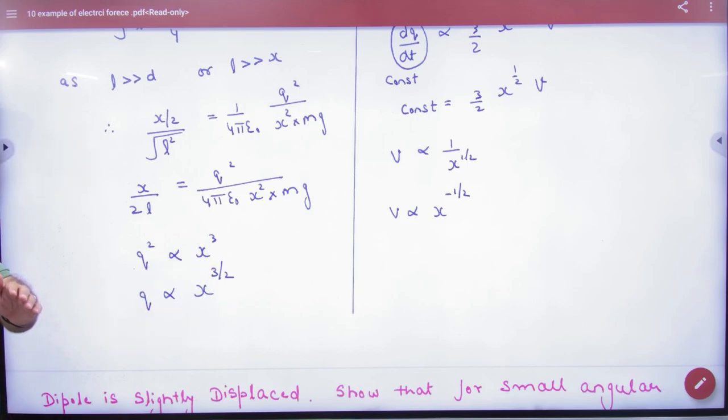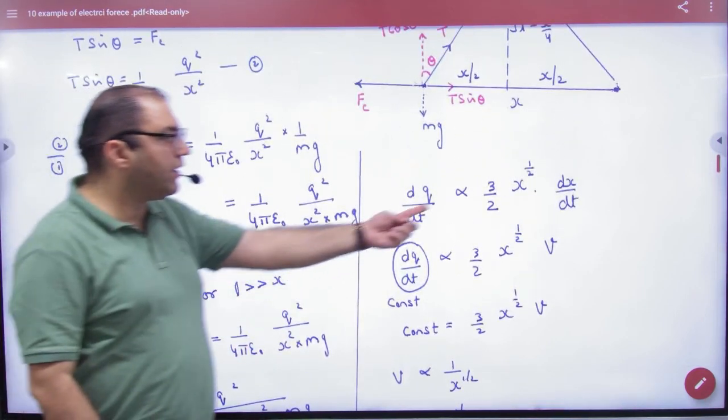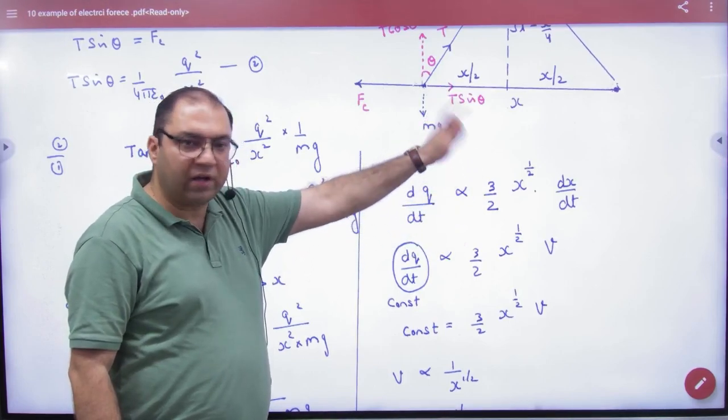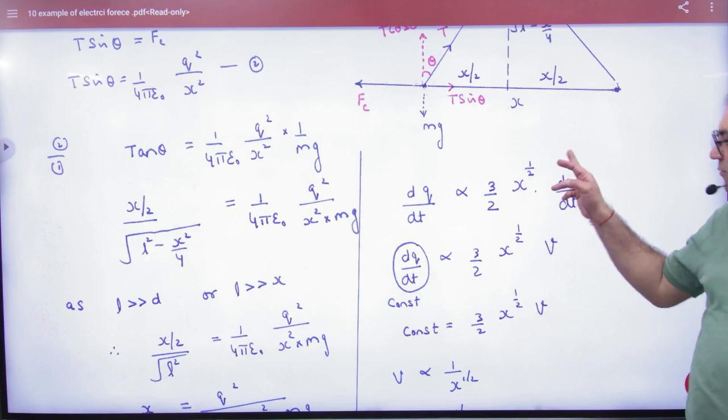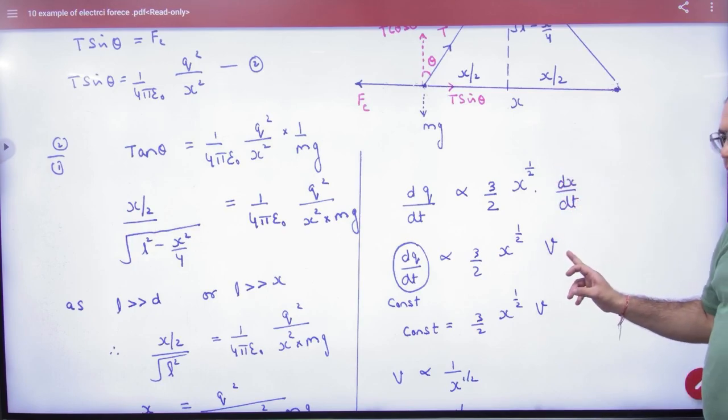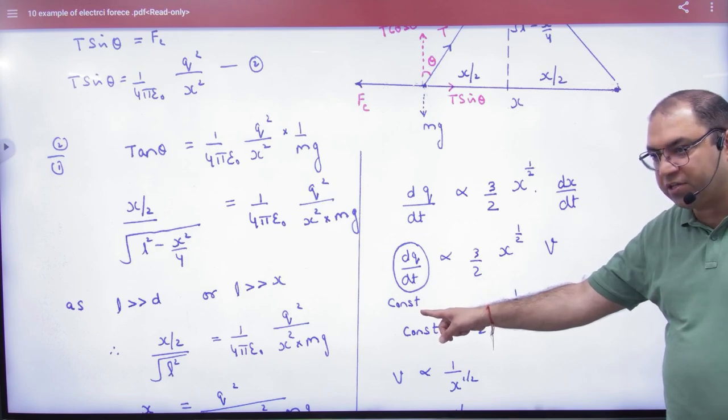Differentiate both sides with respect to time. D by dt, D by dt. Differentiate with respect to time. This becomes DQ by dt. D by dt of x^(3/2) becomes 3 by 2 times x raised to power half into dx by dt. If we differentiate, dx by dt is V.